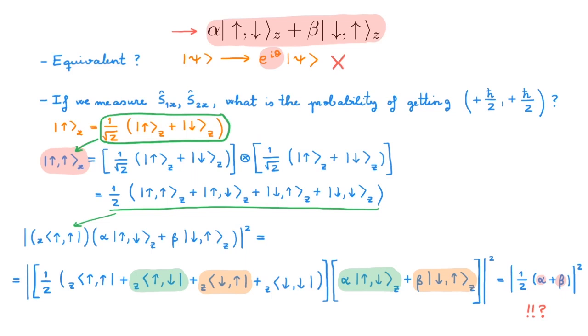So what does this mean? We must remove exchange degeneracy and decide from all the mathematically allowed states which one is the physically allowed one.